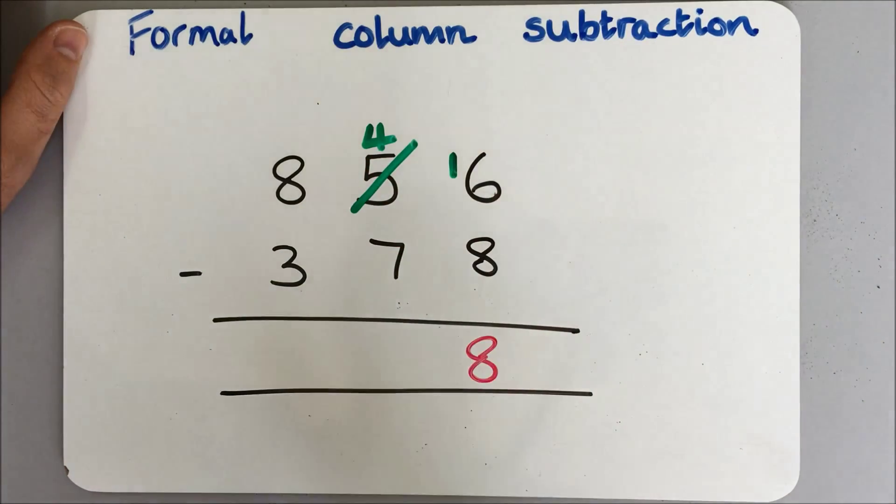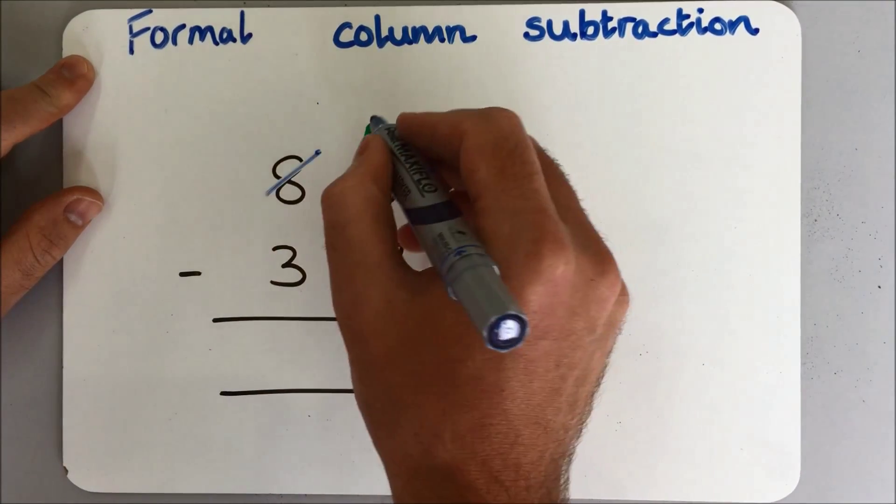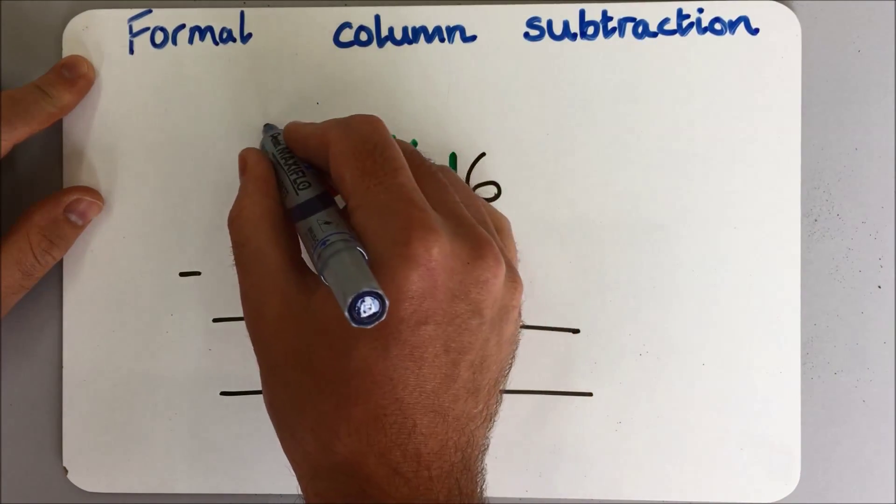So that's going to be a 40. So I've got 16 taking away 8, which obviously gives me 8.